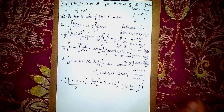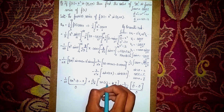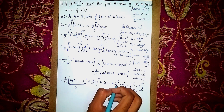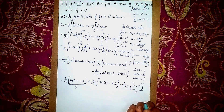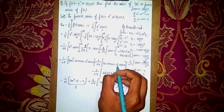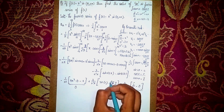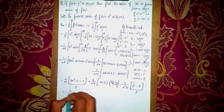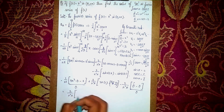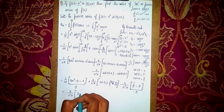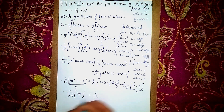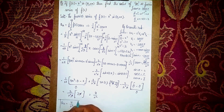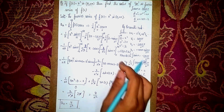Simplifying: (2/n²π) × 2π — the π's cancel, giving 4/n². Therefore aₙ = 4/n². These are the steps to solve this question. This is a 3-mark question.